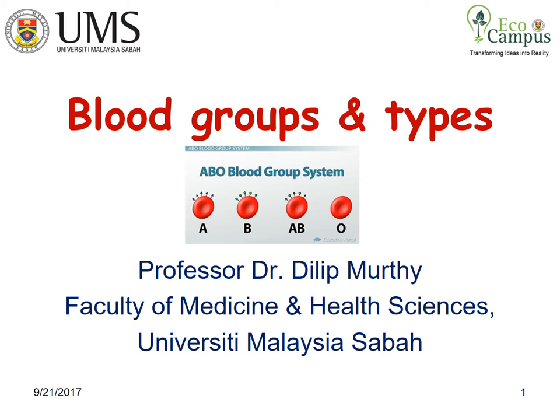Welcome to this presentation of blood groups and types. The membrane of red blood cells, or RBCs, contains a large number of antigens known as agglutinogens. Based on the presence of agglutinogens, well-defined groups are recognized. The major blood groups are those present in all individuals and include the ABO system and the Rh system.